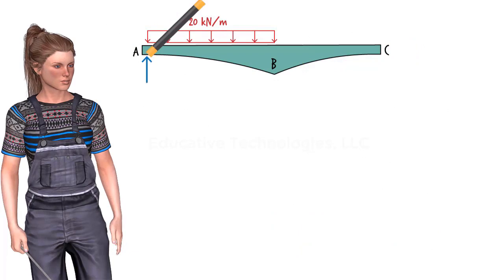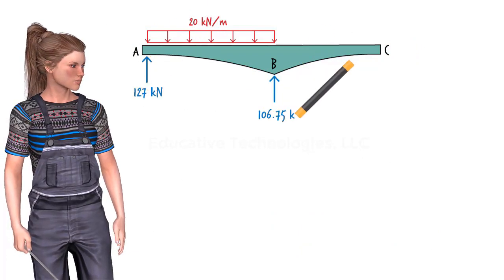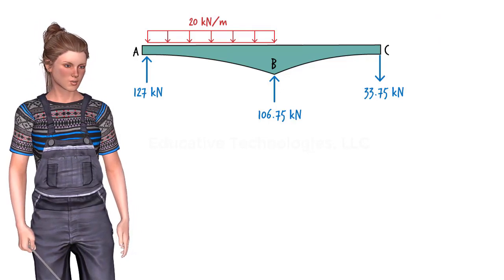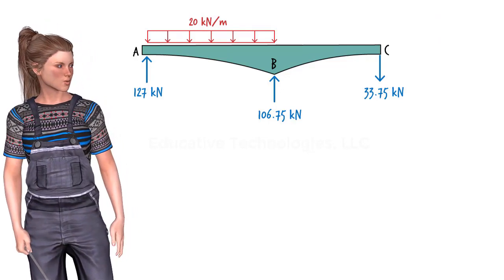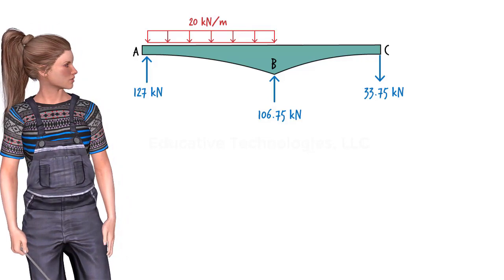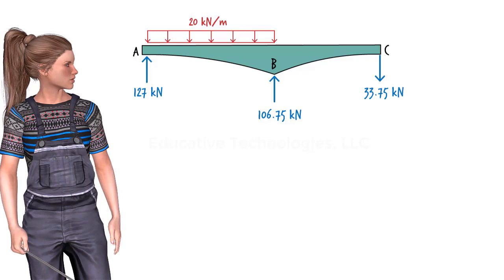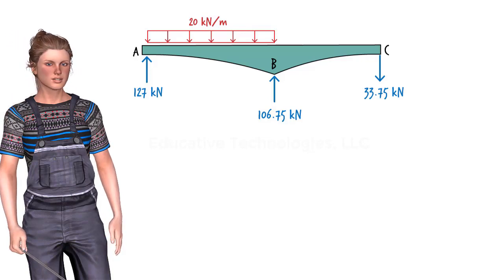And therefore, the support reactions for the beam are as shown. Please keep in mind that this analysis was done for a two-span tapered beam with a rectangular cross-section and a deep-to-shallow height ratio of 4. Different slope-deflection equations result if we change these assumptions.